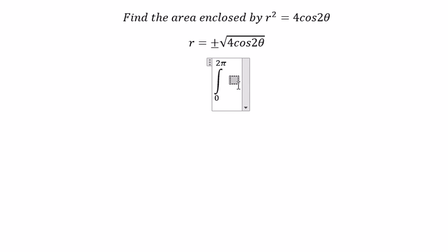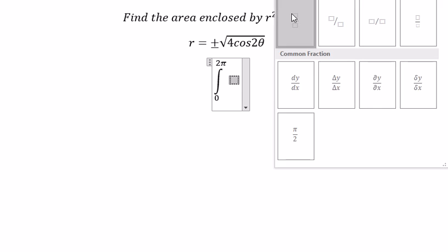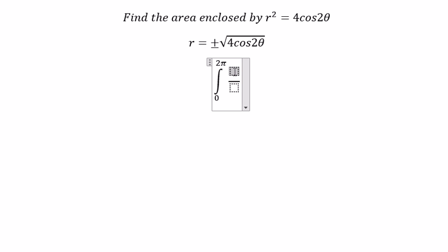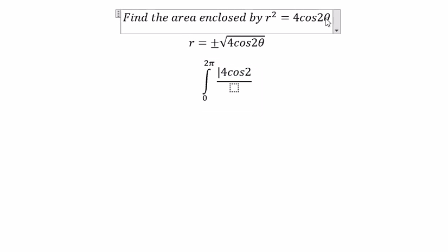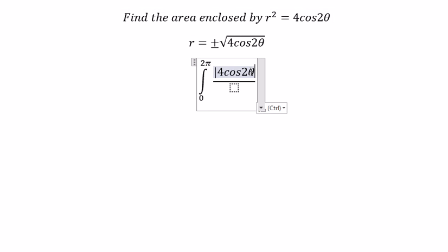And we have the square of r squared, you got about the absolute value of 4cos2θ over number 2 dθ. So we have 4 divided by 2 is about number 2.